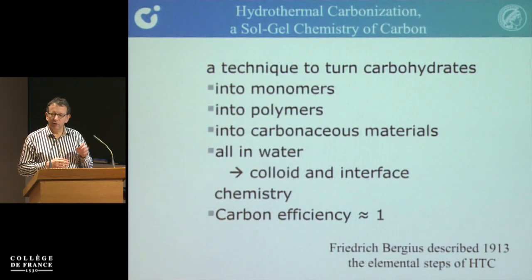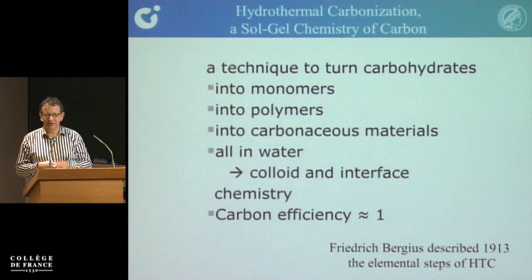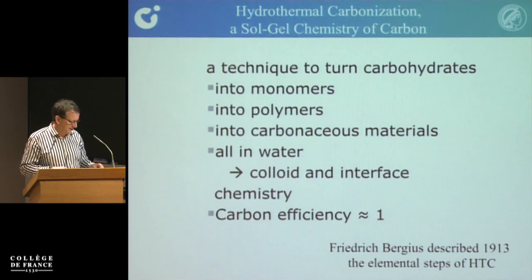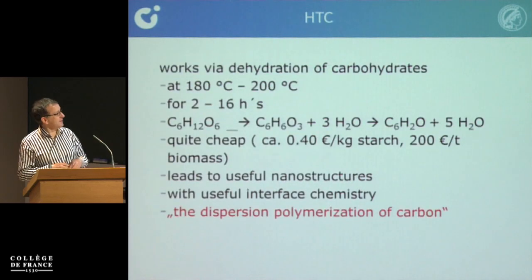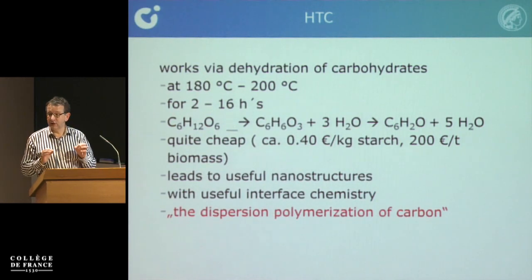This is not really new — Friedrich Bergius, Nobel laureate, described all the techniques in 1913. Those days there were no electron microscopes, but he already knew a lot. In the very end, everything here is a reinvention. This is how it works — it's incredibly cheap, so at industrial scale we can make carbons for 200 euro per tonne.